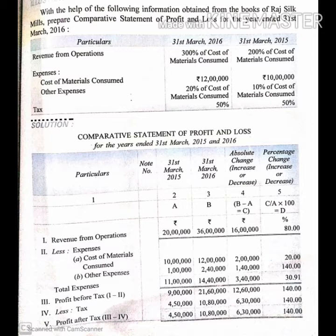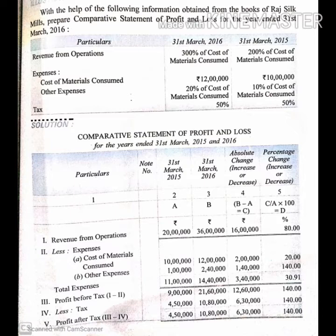Now we find total expenses and profit before tax. Revenue from operations less total expenses gives profit before tax. For 2015: revenue Rs. 20 lakhs minus total expenses Rs. 11 lakhs equals profit before tax Rs. 9 lakhs. For 2016: revenue Rs. 36 lakhs minus total expenses Rs. 14 lakhs 40,000 equals profit before tax Rs. 21 lakhs 60,000. Absolute change is 21 lakhs 60,000 minus 9 lakhs, equal to Rs. 12 lakhs 60,000. Percentage change is 12 lakhs 60,000 divided by 9 lakhs multiplied by 100, equal to 140%.